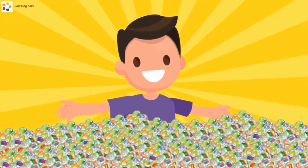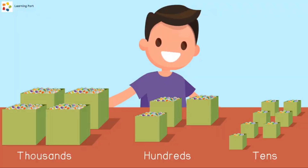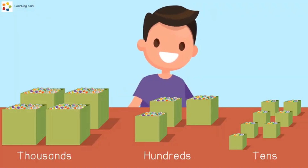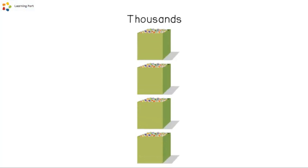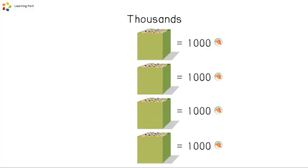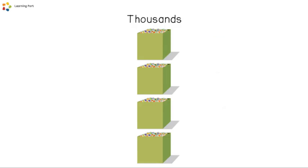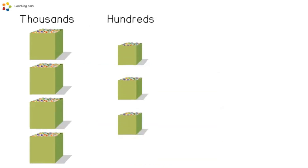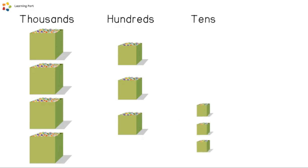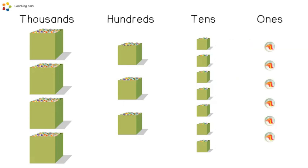Baby Fabian has a lot of marbles. He keeps them in three types of boxes. He has four big boxes, and he can fill each box with 1,000 marbles. He also has three smaller boxes, and he fills each smaller box with 100 marbles. He has seven more smaller boxes that can only hold 10 marbles. Finally, he has six marbles in his hand.